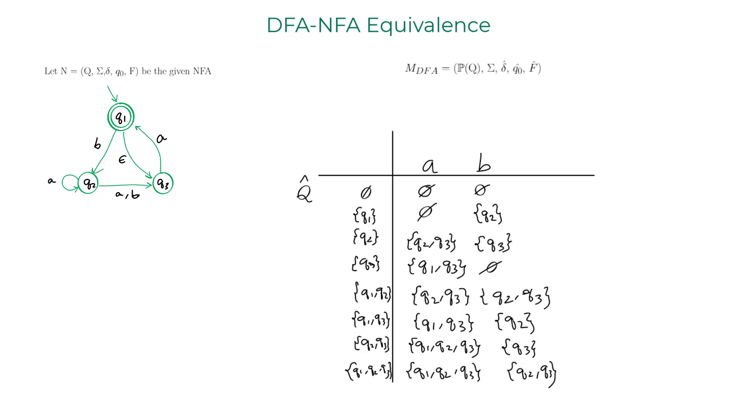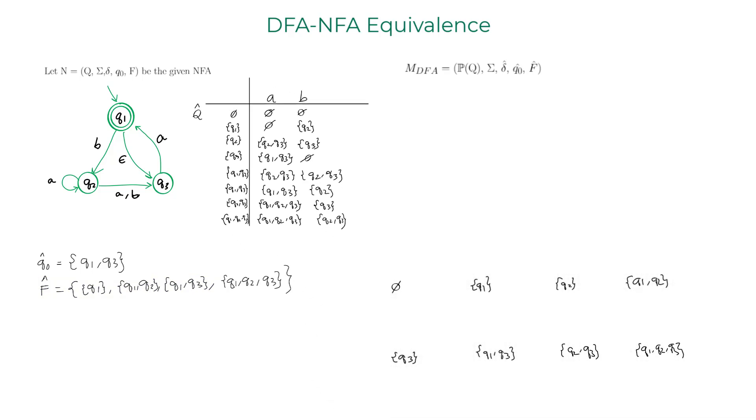There you go. Now we have the transition table for the corresponding DFA. The start state would be the set {Q1, Q3} because as soon as the NFA enters at Q1, it transitions to Q3. The accept states of this DFA is all the states that contain Q1, which is the accept state of NFA.